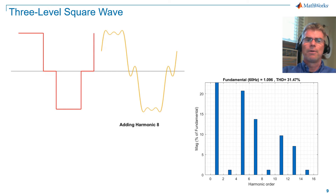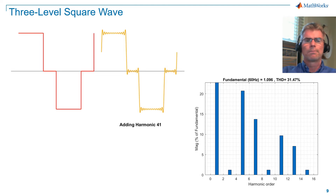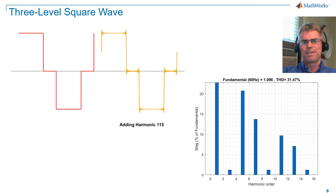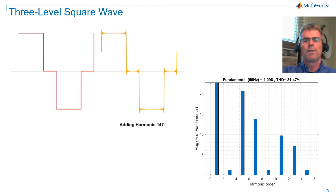Next, we'll look at a three-level square wave. It's seen that this wave is made up of 5th and 7th, 11th and 13th harmonics, and so on. Total harmonic distortion is 31.47%. This harmonic signature is typical of a so-called six-pulse device, where switching is occurring every 60 degrees. We see odd harmonics sidebanded around multiples of 6. If we extend the harmonic analysis out, we would see harmonics at 17th and 19th, 23rd and 25th, and so on.